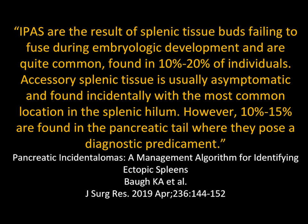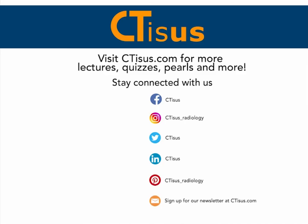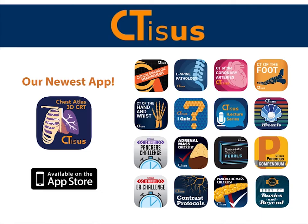As we transition from pancreas to spleen, something that overlaps are splenules, which simulate neuroendocrine tumors in the tail of the pancreas. We'll stop here and come back to talk about the spleen and other important topics. If you liked what you heard, please subscribe and visit ctss.com for lectures, quizzes, pearls, and more. Check out our apps available for free on the Apple Store.